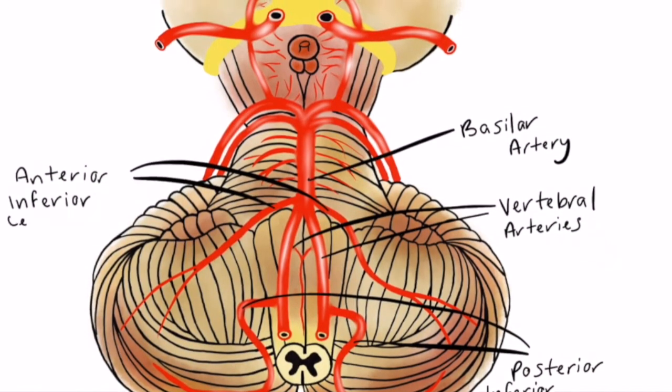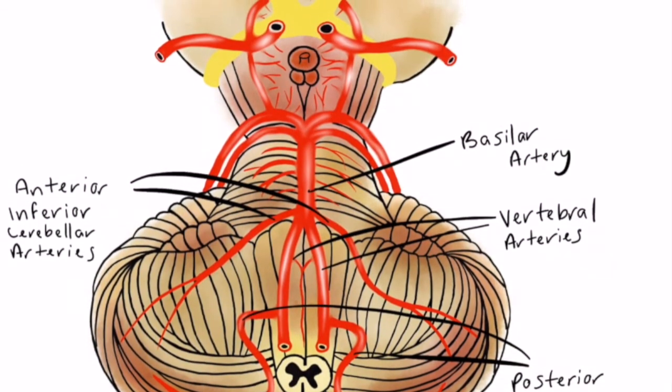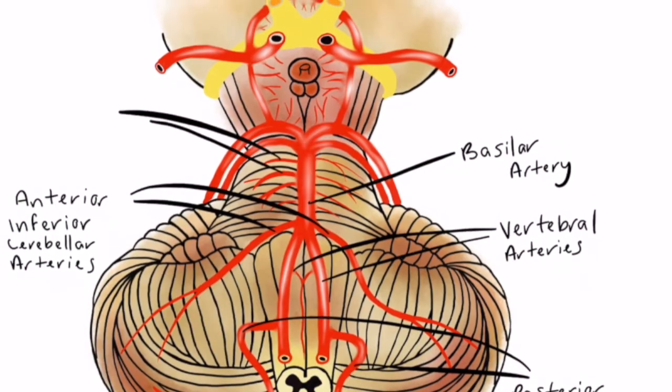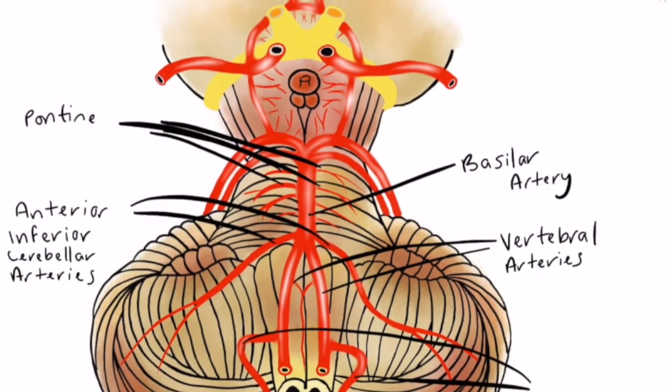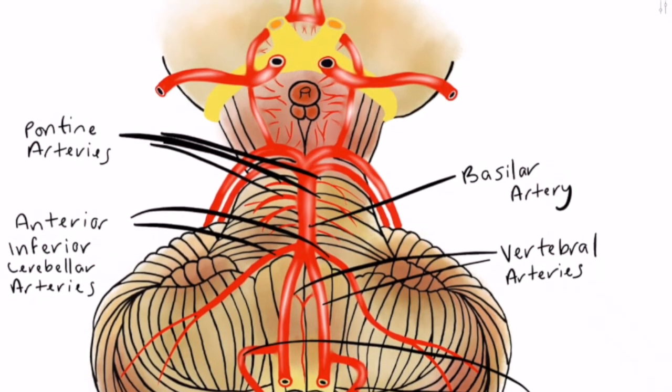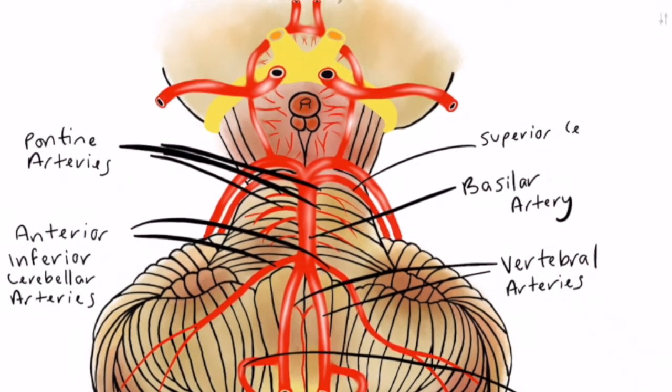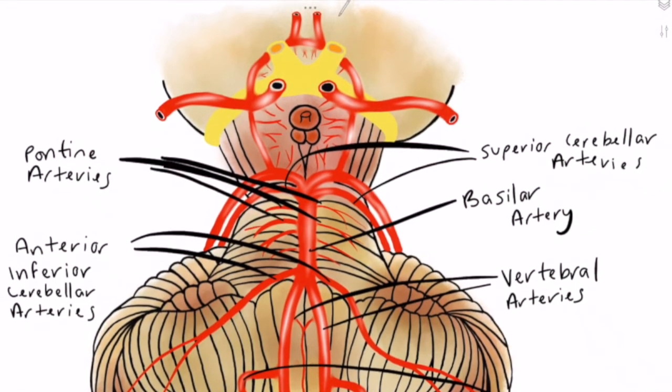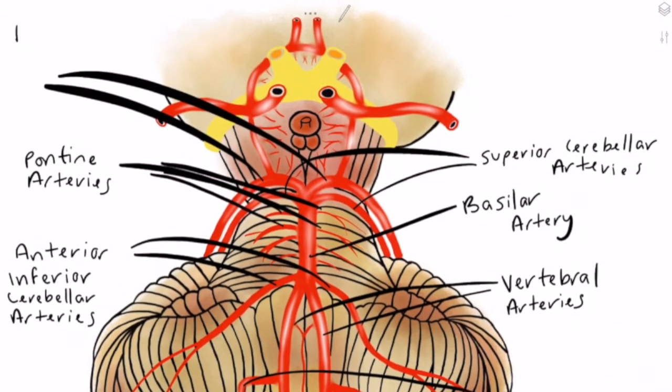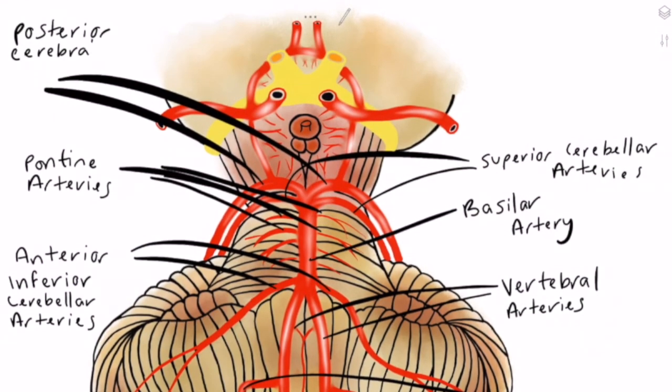From the basilar artery comes the anterior inferior cerebellar arteries or AICA and also several small branches called the pontine arteries. Also from the basilar artery we have the superior cerebellar arteries and finally the posterior cerebral arteries at the top.